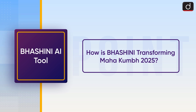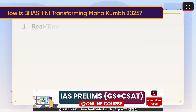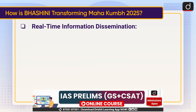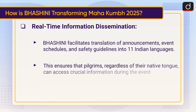Now, lastly, moving on to how Bhashani is transforming Mahakumbh 2025. Real-time information dissemination: Bhashani facilitates translation of announcements, event schedules, and safety guidelines into 11 Indian languages. This ensures that pilgrims, regardless of their native tongue, can access crucial information during the event.